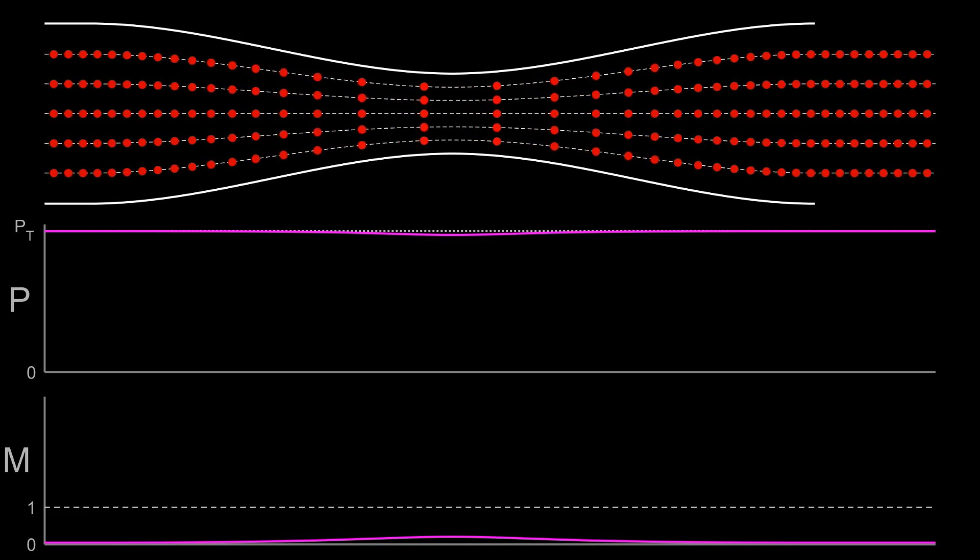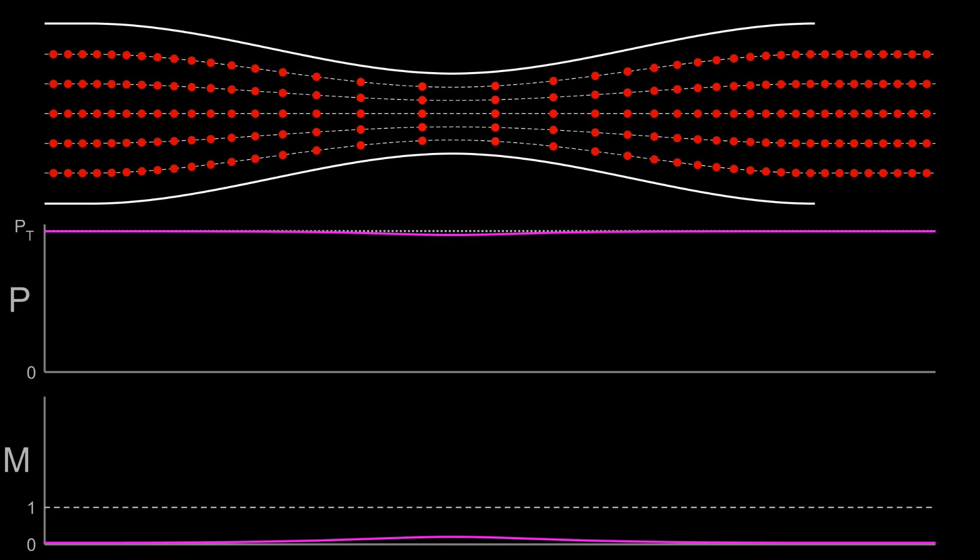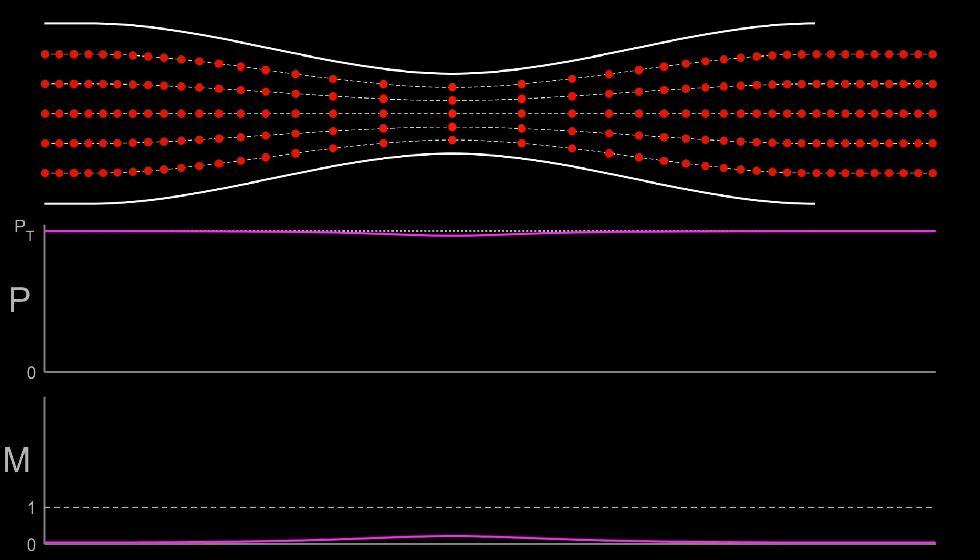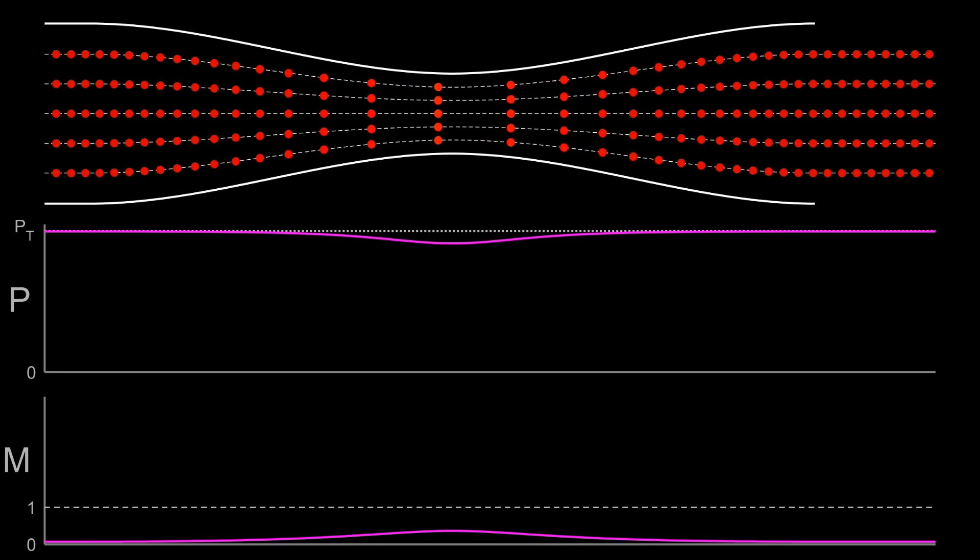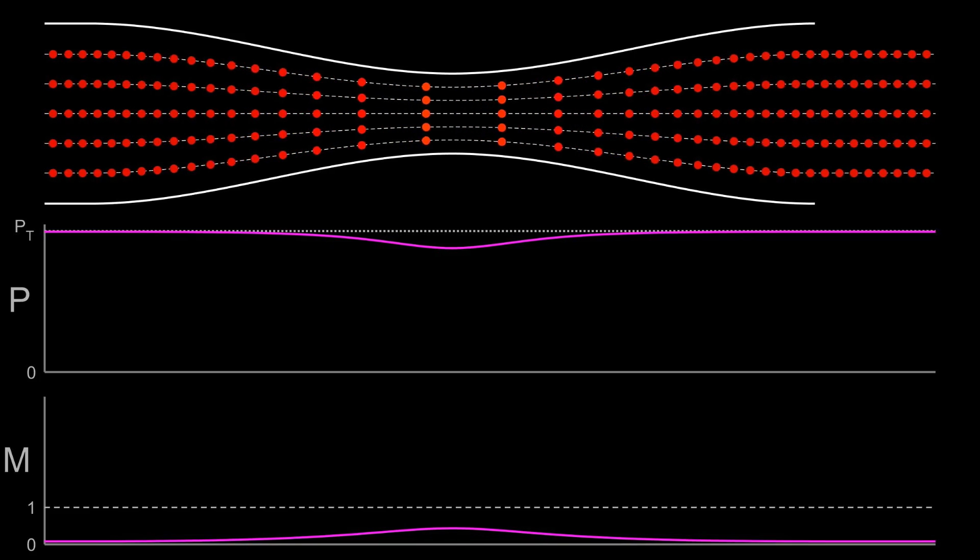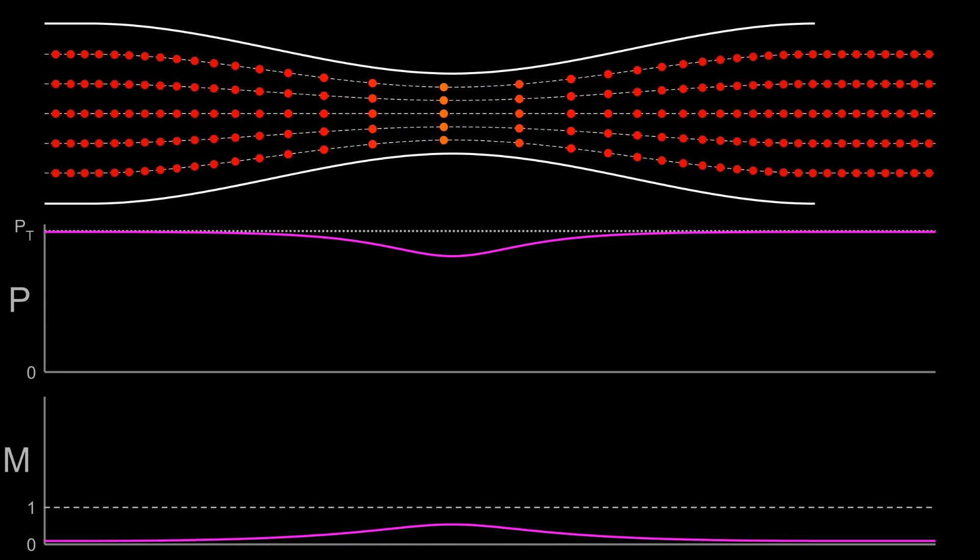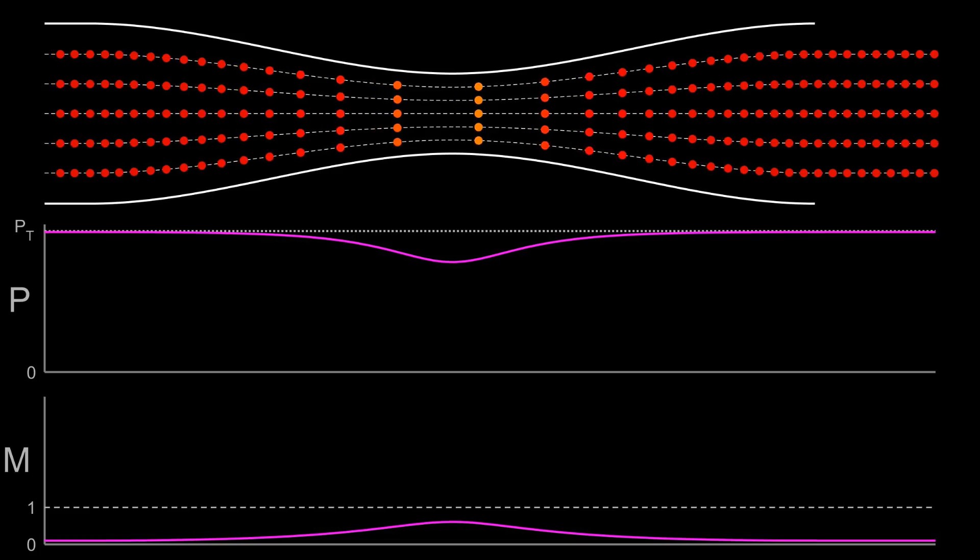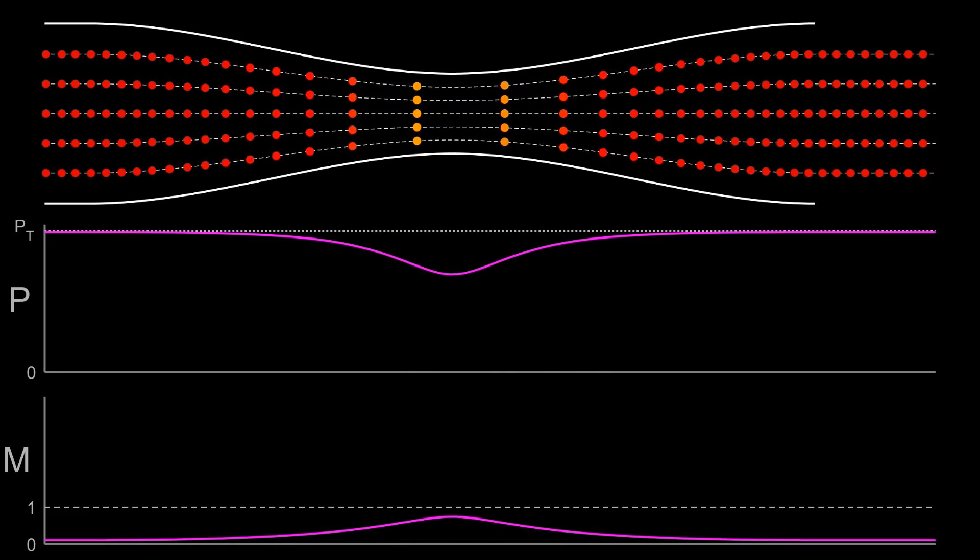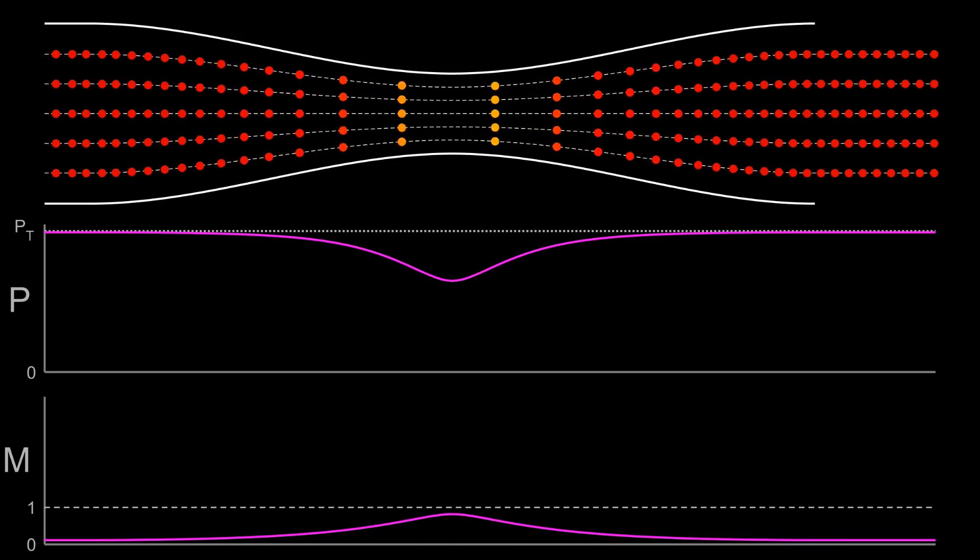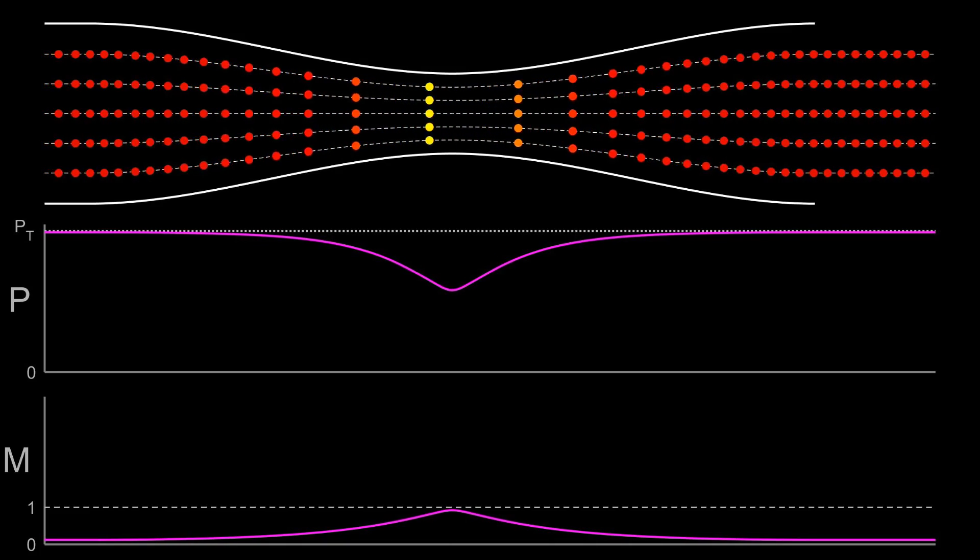Below Mach numbers of about 0.3, we can treat fluids as incompressible without sacrificing much accuracy. We can't really see anything interesting with this slow flow, so let's speed it up. As we increase the speed, we see changes in both the Mach number curve and the static pressure curve. The static pressure drops a little bit everywhere, as the increased velocity converts energy which had previously been stored as pressure into kinetic energy. The pressure drop is particularly noticeable at the throat, as this is the point of highest velocity.